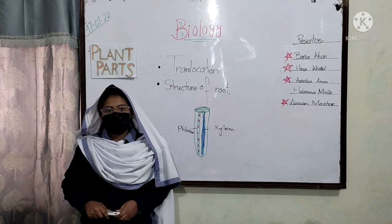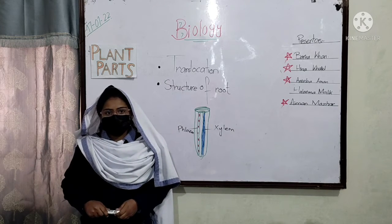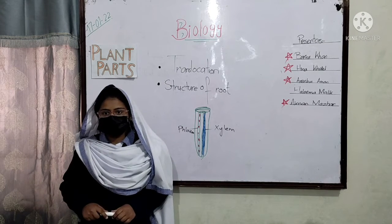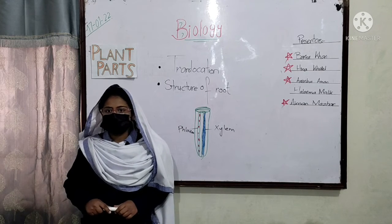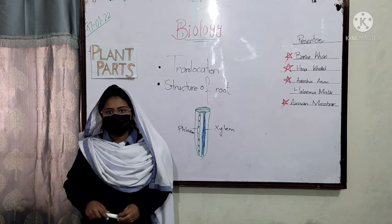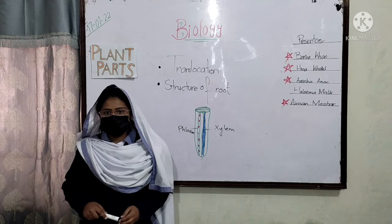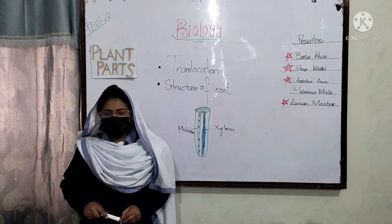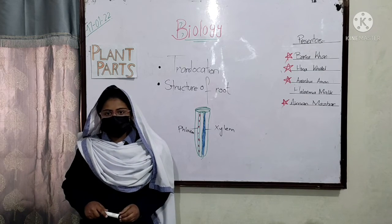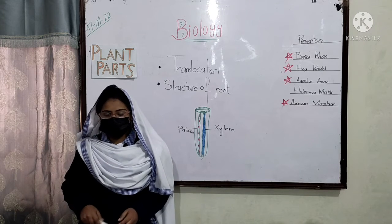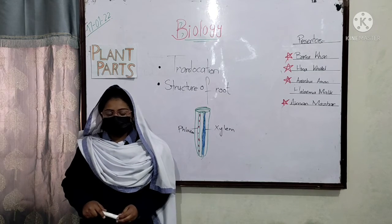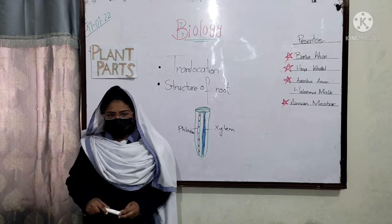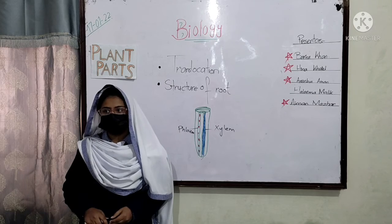Roots have xylem tissue to move water and minerals from the soil up through the stem to the leaves. The phloem tissue in roots transports food from the leaves.